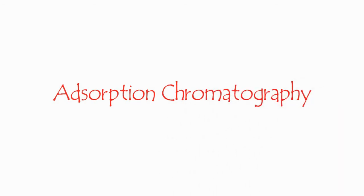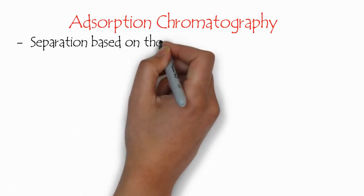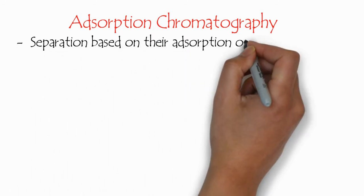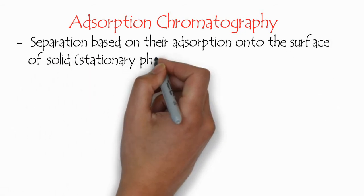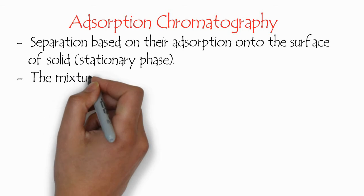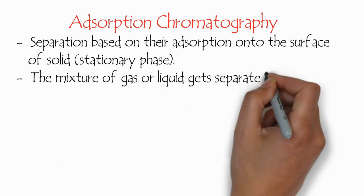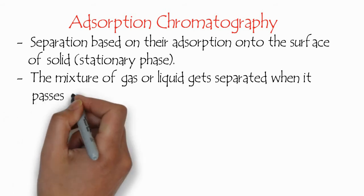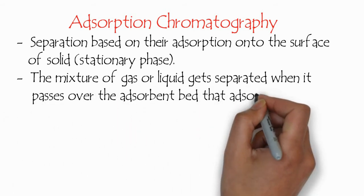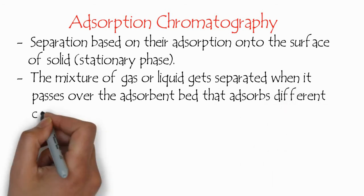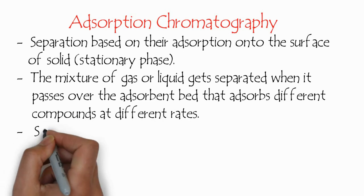The first class among the second classification is adsorption chromatography. In this case, the separation is based on adsorption onto the surface of a solid, which is usually the stationary phase. The mixture of gas or liquid gets separated when it passes over the adsorbent beds that absorb different compounds at different rates.